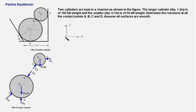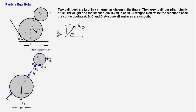The force RC acts towards the left and is horizontal. The force RD is pointing in this direction — we do not know the angle it makes with the X axis; let us call it theta. The same angle that line OP makes with the horizontal is also theta. The weight of 50 kN acts downwards. We have to first find the angle theta.